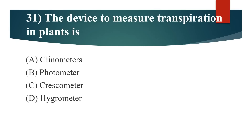31st question: The device to measure transpiration in plants is? Option A: Linometer. Option B: Photometer. Option C: Crescometer. Option D: Hygrometer. Answer is Option D: Hygrometer.